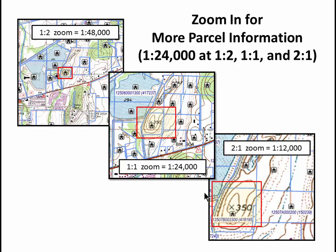You'll see the parcels when they're turned on and you have the subscription once you get down to the 1 to 48,000 or so scale. So if you're in the traditional opening map which is the 1 to 24,000 at 1 to 1, you will see the parcels. You can zoom out a little bit to the 1 to 2 and you'll still see them. That red box is the same in all three of these. It's just a question of the zoom level, and you can zoom in even farther to the 2 to 1 and of course go to the aerials to get even higher resolution. So what you'll see is an icon that displays the parcel and you'll see the perimeter of the parcel as well.